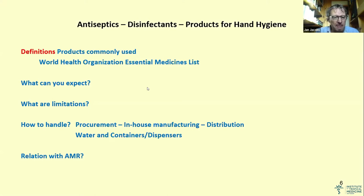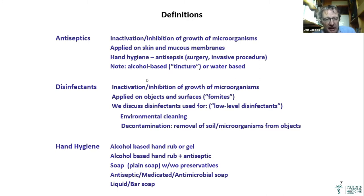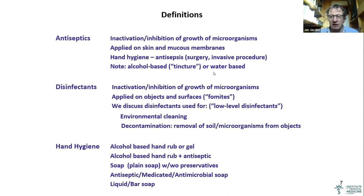Definitions. First, antiseptics: they inhibit growth of microorganisms and are applied on living tissues, or used in hand hygiene and surgery. Good to know that there are products based on alcohol — called tinctures among antiseptics — and there are water-based products. They will have a different vulnerability and susceptibility to bacterial contamination, as I will tell you later.